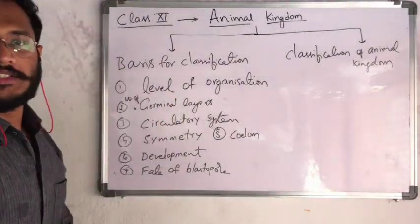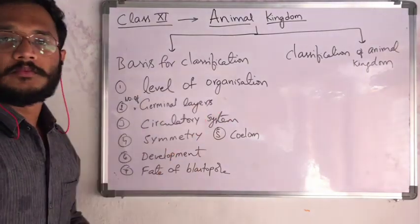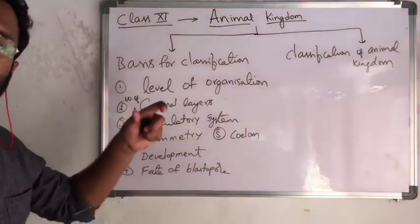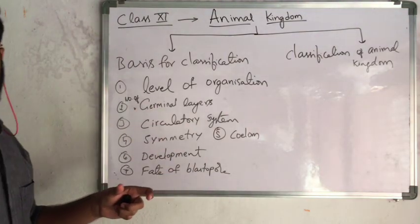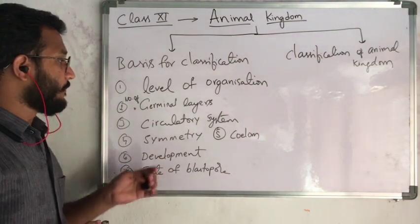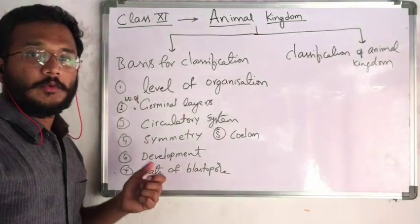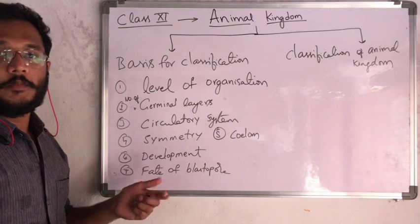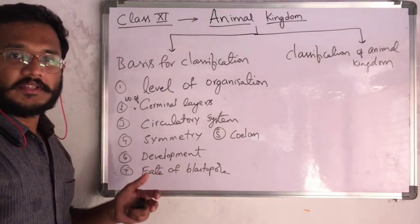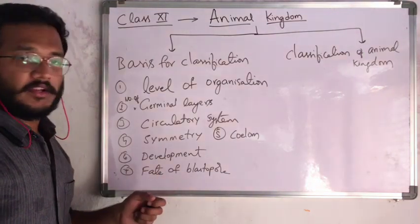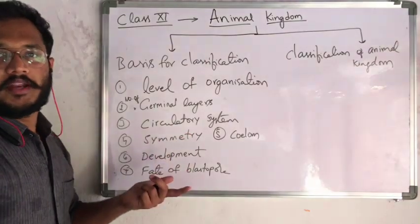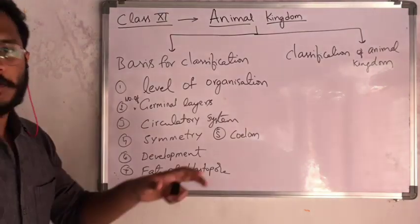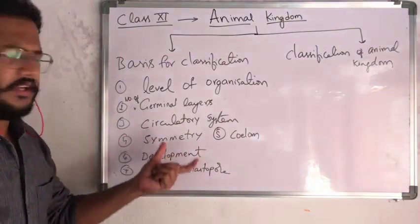For example, level of organization has five levels. What are those, and which animals exhibit those five? And number of germinal layers — what are the germinal layers, how many types are there, which animals exhibit which type? Circulatory system has two types: open type and closed type. Which animals exhibit open type and which animals exhibit closed type?